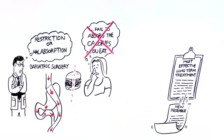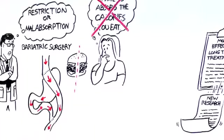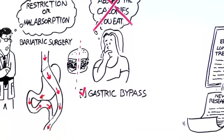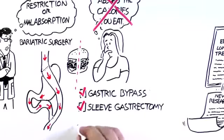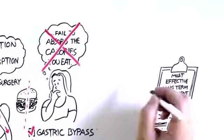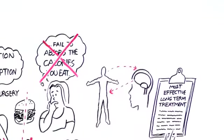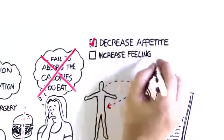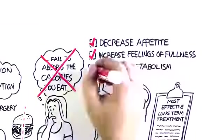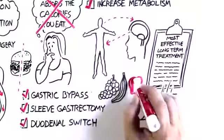But new research suggests that certain types of bariatric surgery, for example, gastric bypass, sleeve gastrectomy, and duodenal switch, affect the signals between the brain and the body to decrease appetite, increase feelings of fullness, increase metabolism, and even encourage preferences for healthier food.